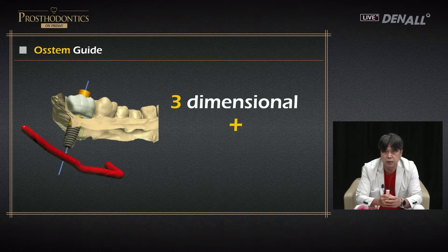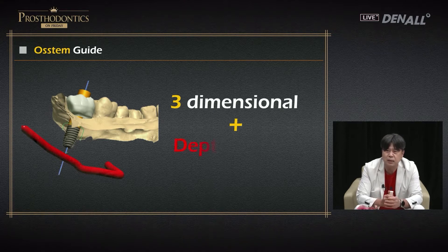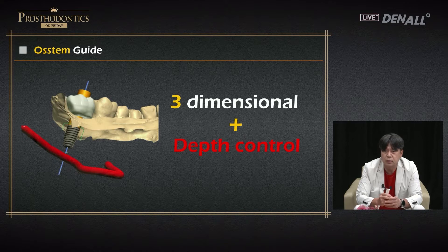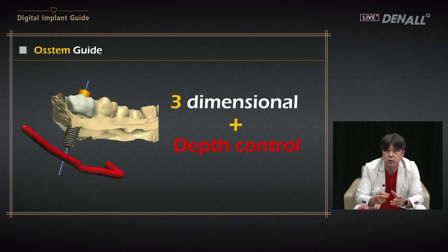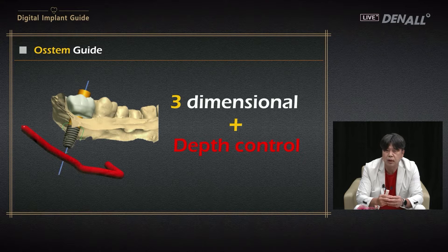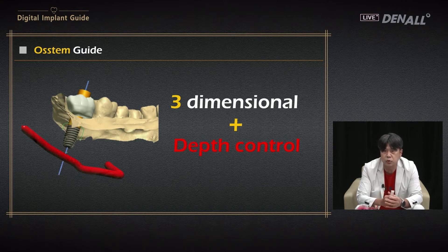A three-dimensional guide requires mesodistal, buccolingual axial inclination, and importantly, depth control. This is the requirement for the next generation guide. In the implant design software, the alveolar nerve canal is visible running at the bottom. Depending on the length of the implant, the canal can be invaded — that is why we need a guide that can do depth control.